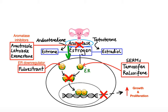Another approach to reduce the effects of testosterone and dihydrotestosterone is to interfere with their binding to the androgen receptor. This can be accomplished with the use of nonsteroidal antiandrogens, such as flutamide, bicalutamide, and nilutamide, which work by binding to androgen receptors and competitively inhibiting their interaction with testosterone and dihydrotestosterone, thus preventing the effects of these hormones in the prostate gland.